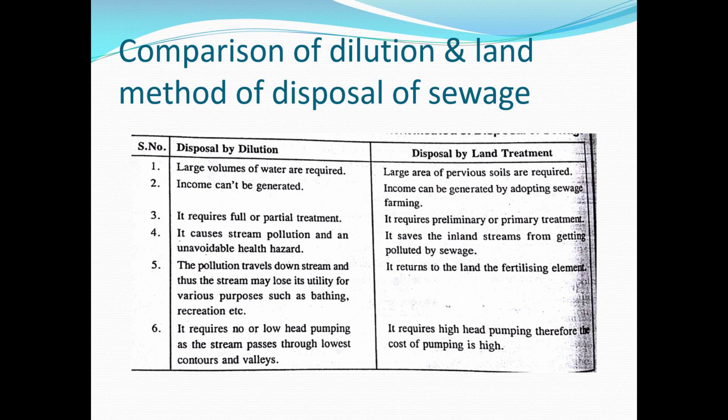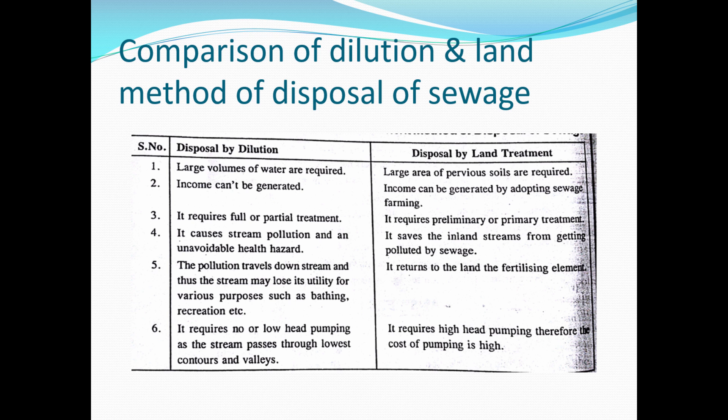The basic differences between dilution and land disposal methods: in dilution, large volumes of water are required, whereas land disposal requires a large area of soil. Income cannot be generated from dilution, but it can from land disposal through irrigation. Dilution requires full and partial treatment, while land disposal requires only preliminary and primary treatment. Dilution may cause stream pollution. During the irrigation process, solids can be removed and heated so that pathogens are eliminated.